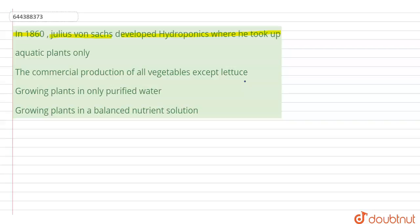Here it says only aquatic plants - no, even the plants which were growing in the soil earlier could be grown in the water medium now. The commercial production of all vegetables except lettuce - no, lettuce can also be grown, so this is also the wrong statement.